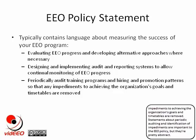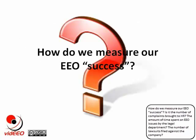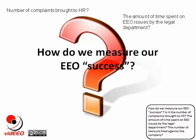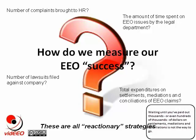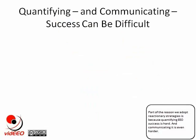Commonly, you'll see statements about evaluating EEO progress and developing alternative approaches where necessary, designing and implementing audit and reporting systems to allow continual monitoring of EEO progress, and periodic audits of training programs and hiring and promotion patterns so that any impediments to achieving the organization's goals and timetables are removed. These statements are important but pretty abstract. How do we measure EEO success? Is it the number of complaints brought to HR, the amount of time spent on EEO issues by the legal department, the number of lawsuits filed, or total expenditures on settlements, mediations, and conciliations? All of these strategies are reactionary — essentially waiting for a problem to occur and then measuring it.